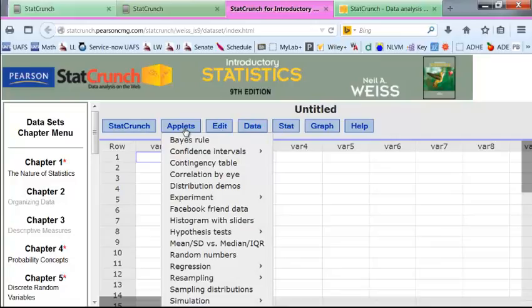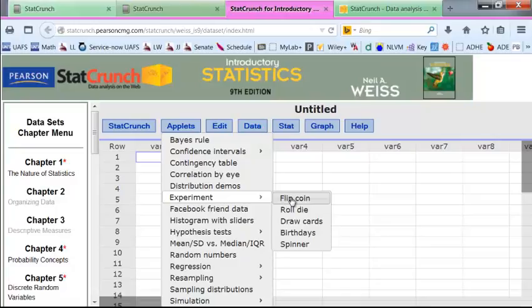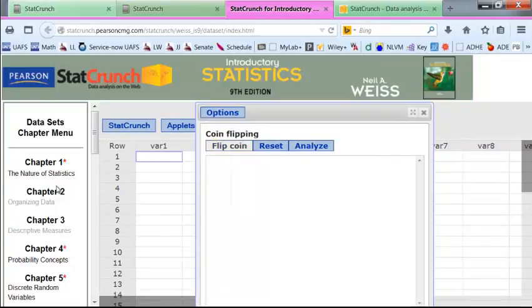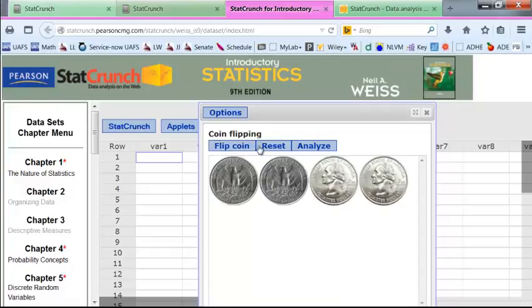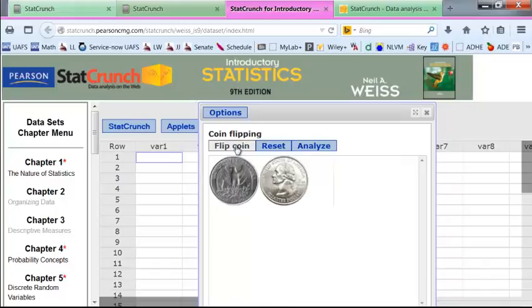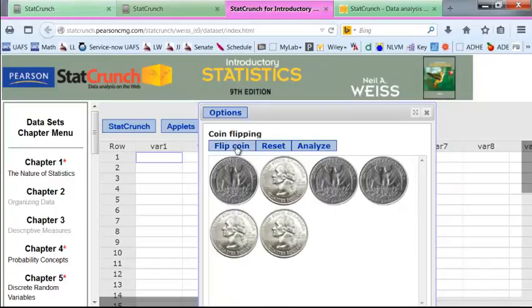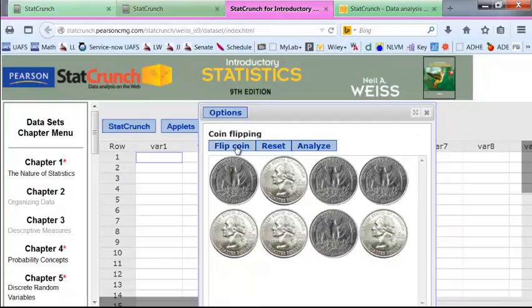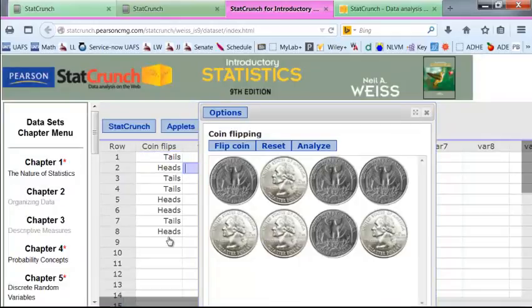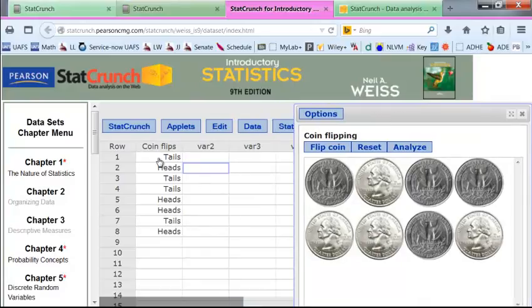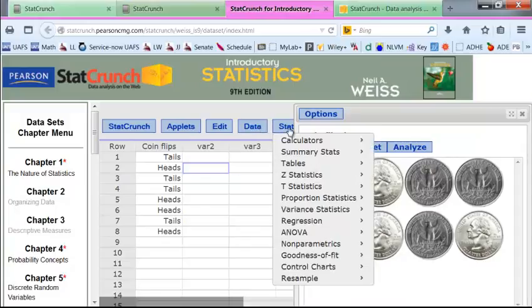One of the things I want to show you right now is experiment. For example, we have the experiment of flipping a coin, and you can flip a coin there and see what happens. We can continue to flip several times. We can reset it. So say we flip eight times. We can also click on Analyze, and notice it came over here in our data with coin flips. We can do some plotting with this. For example, we want to go here to statistics.